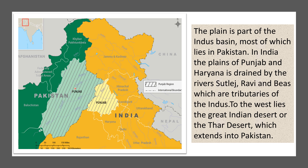The five rivers are Jhelam, Chenab, Ravi, and Sutlej — all tributaries of the major river Indus. To the west of this fertile plain lies the Thar Desert, which extends into Pakistan.